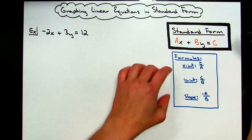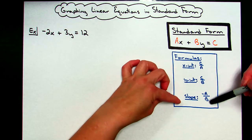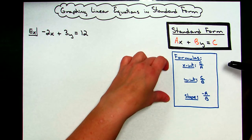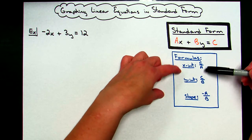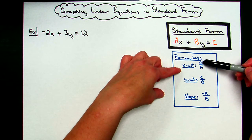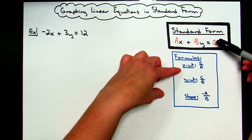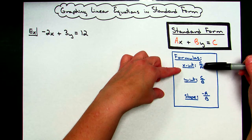If you are good at memorizing, there are some formulas that go along with standard form where you can graph it really quickly. The X-intercept when an equation is in standard form can be found by taking C over A. So, C over A, and that's going to real quickly give you your X-intercept.